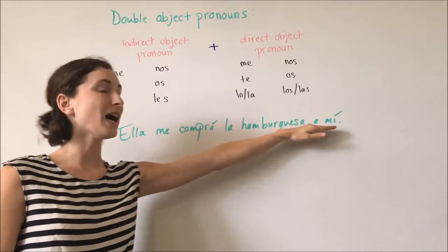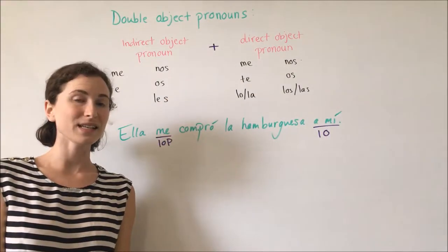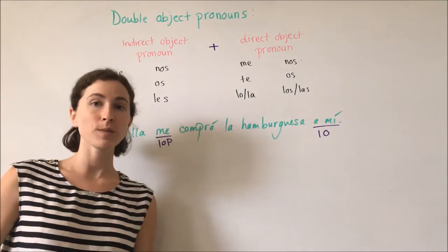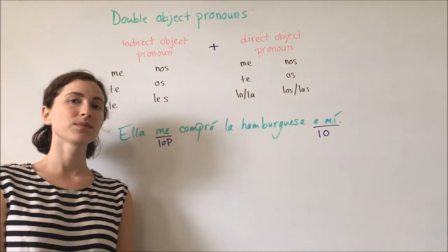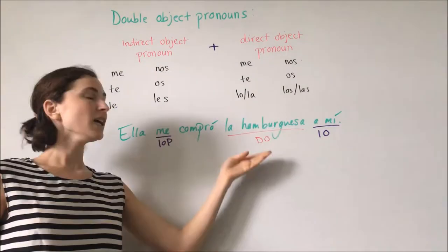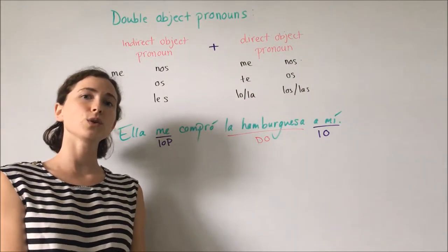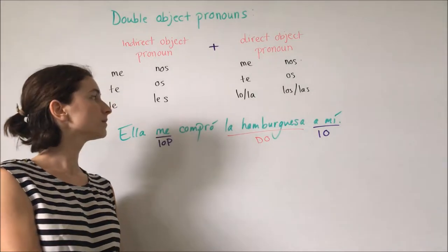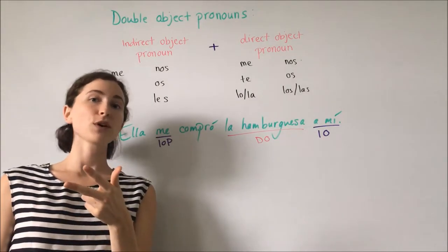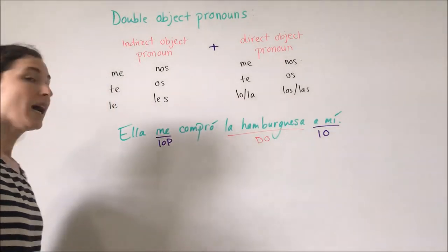We have 'me' as our indirect object pronoun because 'a mí' shows us that I am the indirect object. Now, looking at the sentence, to determine what our direct object is, ask yourself: what was verbed? What was bought? La hamburguesa — the hamburger. That is our direct object. Which direct object pronoun would we substitute? La, because it is singular and feminine and third person. I'm not a hamburger, you're not a hamburger — la hamburguesa, it.